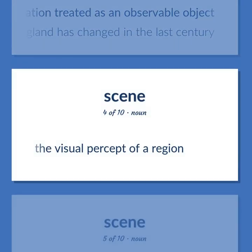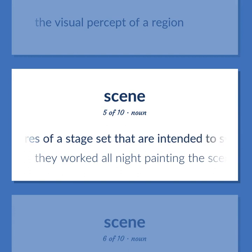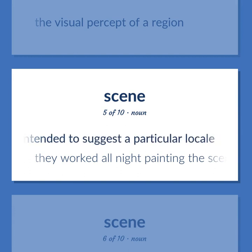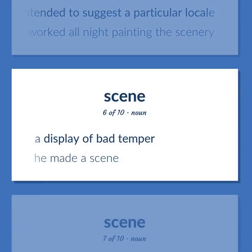Scene: The visual percept of a region. The painted structures of a stage set that are intended to suggest a particular locale. They worked all night painting the scenery. A display of bad temper. He made a scene.